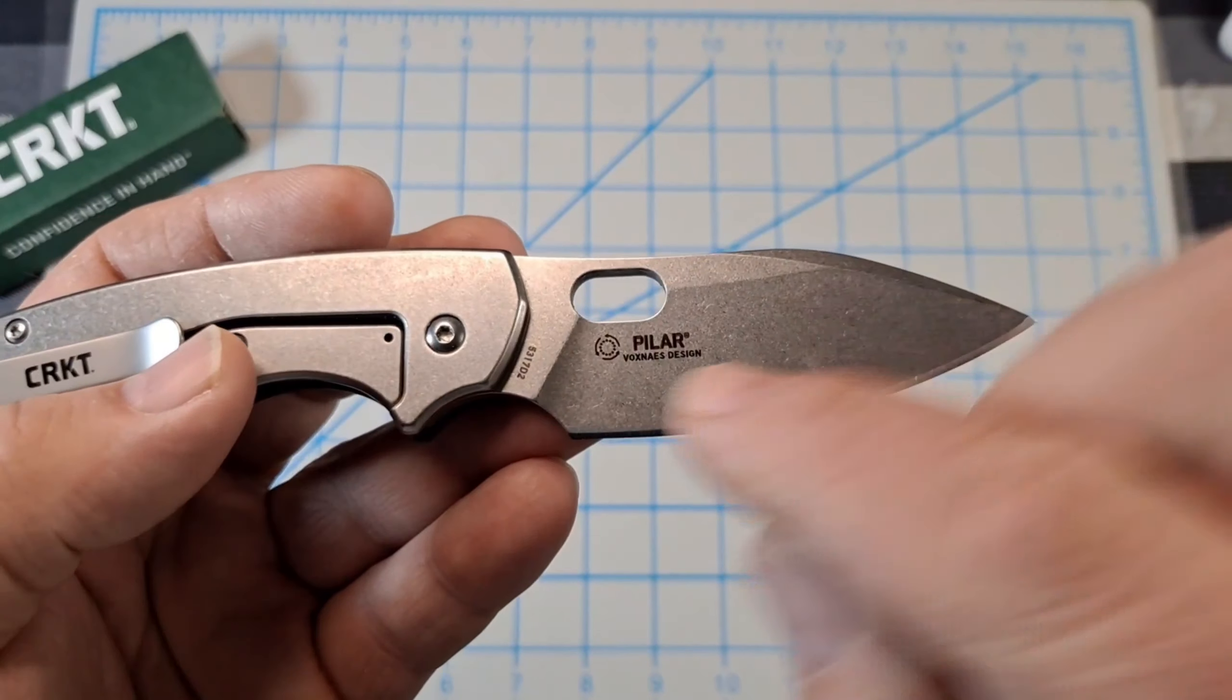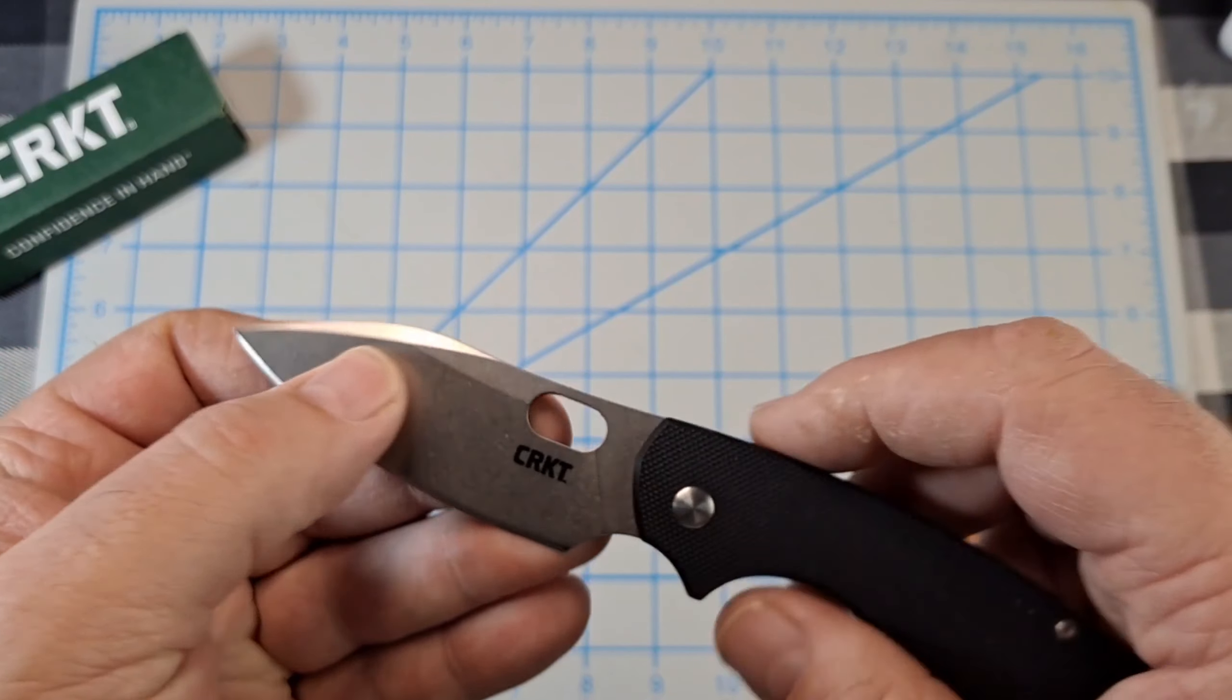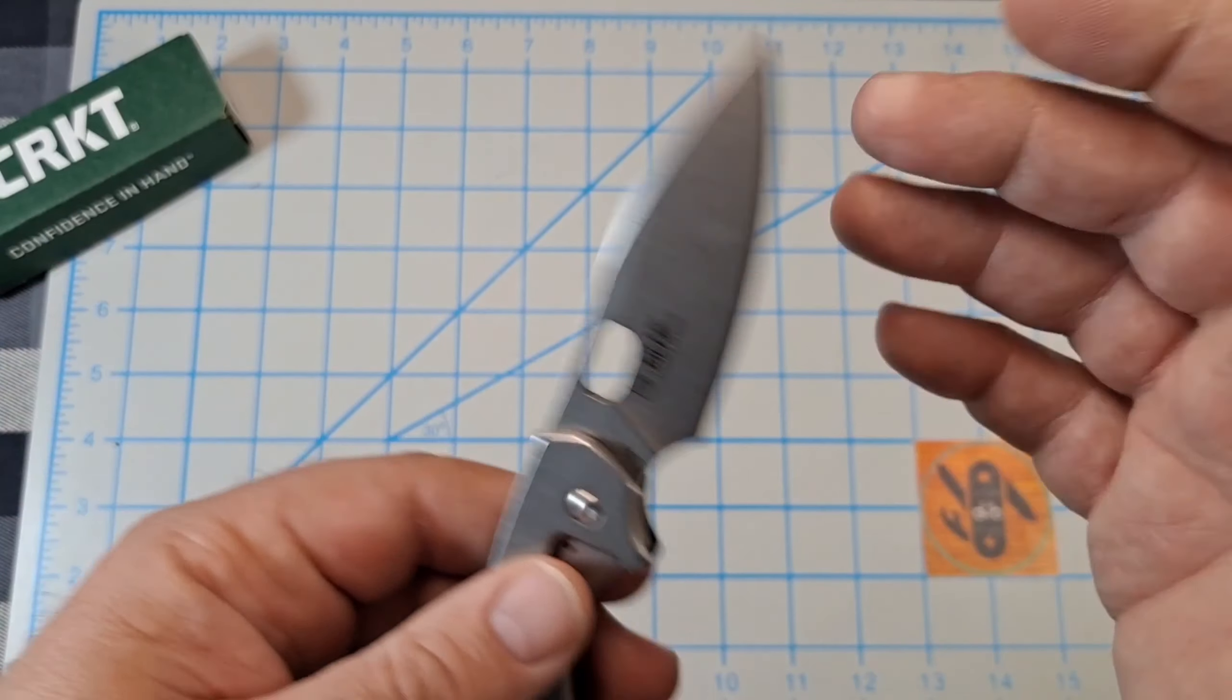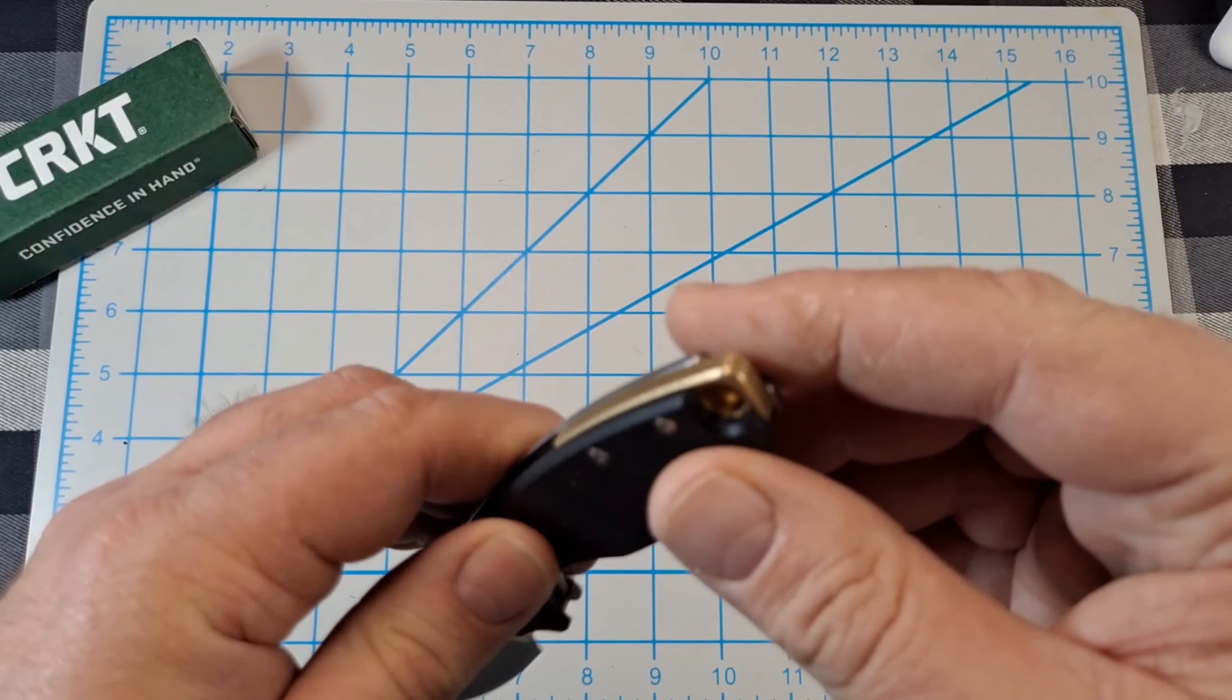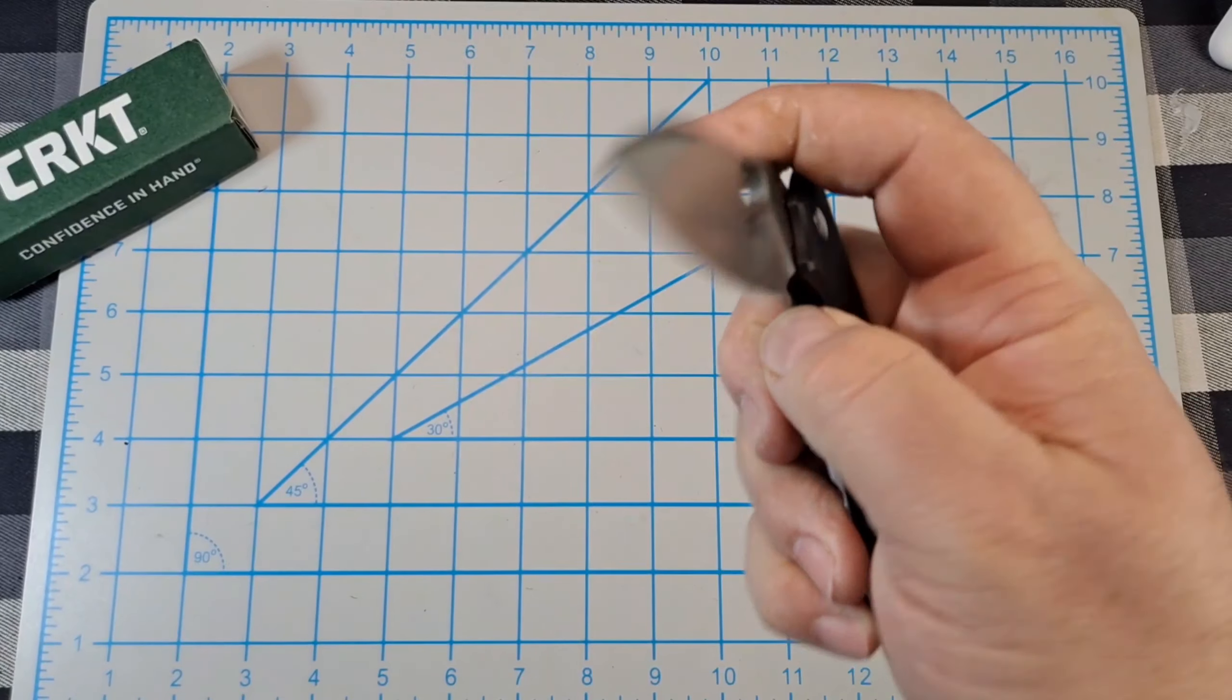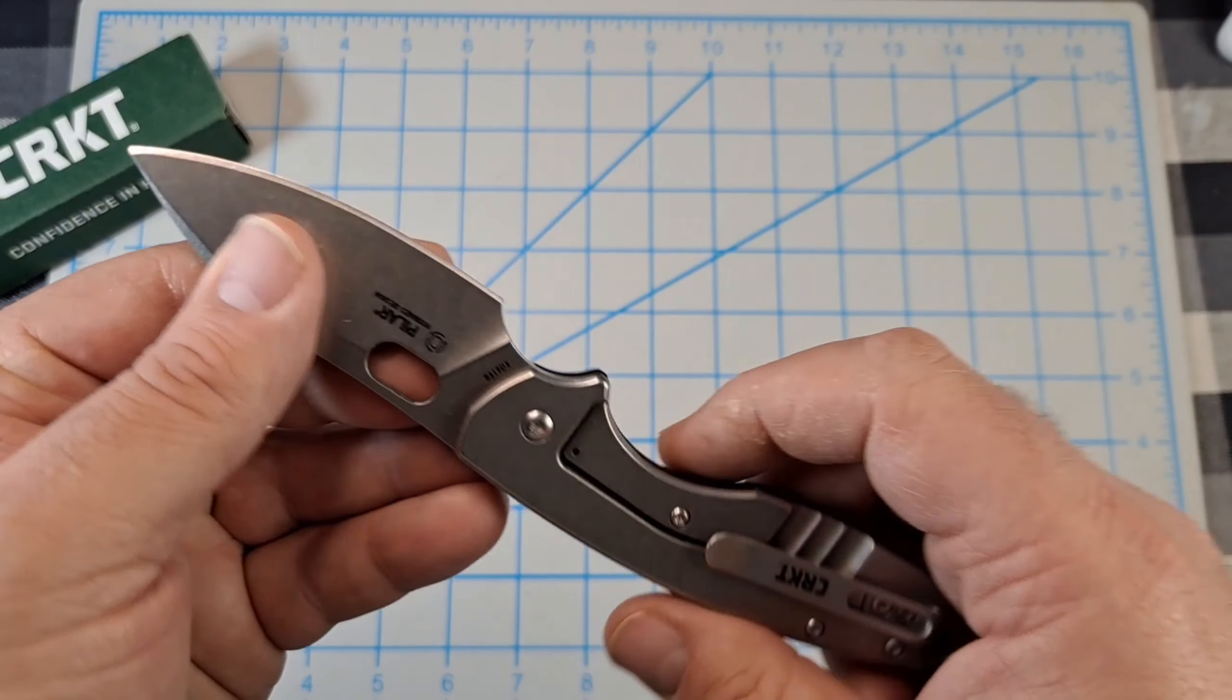It's the third iteration of the Pilar, Jesper Voxnaes design. It has the IKBS bearing symbol. Now as far as I can see, it doesn't have the steel marking on this. I don't see D2 anywhere, and I don't think the 8CR13MOV is on the other one. The only way you can tell is by this backspacer - this one has this bronze colored one, and the 8CR has a silver colored one. So that's the only way you can tell what blade steel you got.